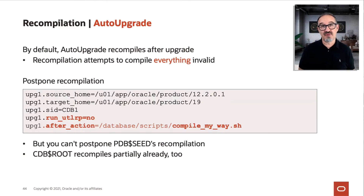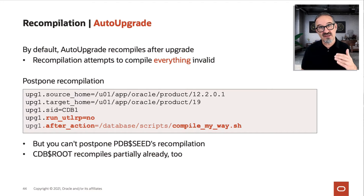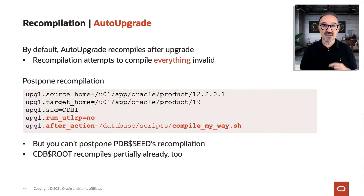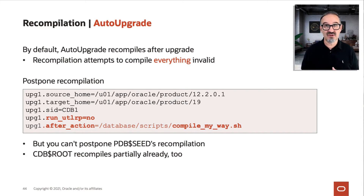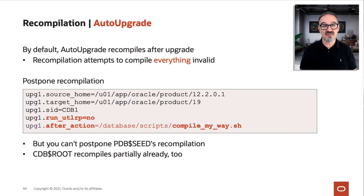By default, auto-upgrade compiles — that's the standard, and it compiles everything invalid. But if you decide you'd like to do this by yourself, you run UTL-RP-NO in your auto-upgrade config file, and then you may pass on a script as well. It's easier if you do this in one shell — an after-action script — and this compile-my-way.sh then calls SQL scripts doing the recompilation your way.